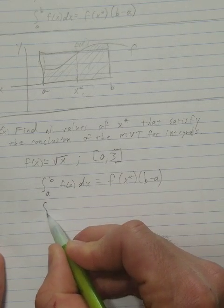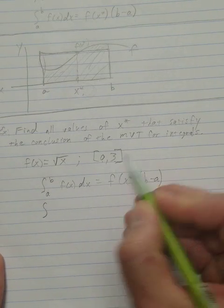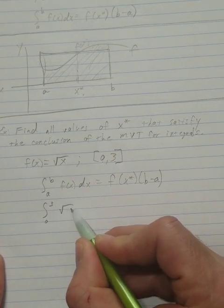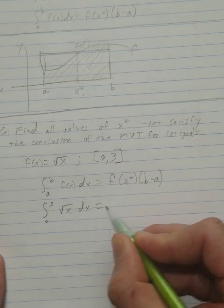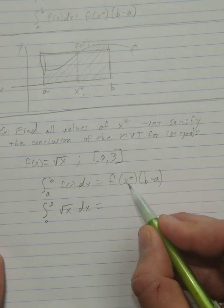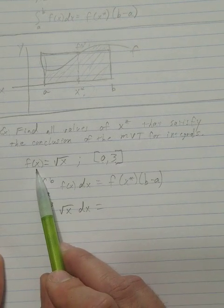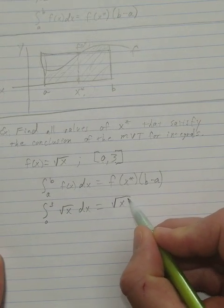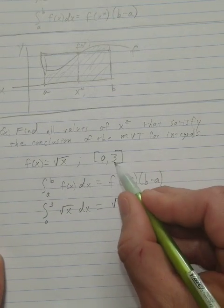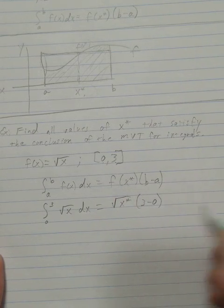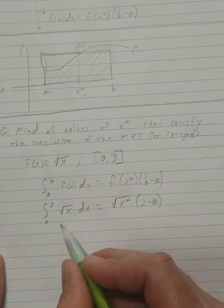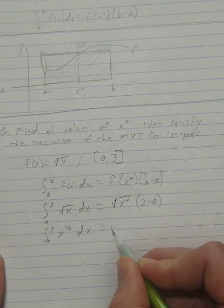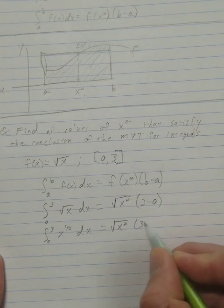Let's fill in. The integral: a is 0, b is 3. f(x) is the square root of x, dx. It's equal to f(x-star), which is just my function f evaluated at x-star — so it would be the square root of x-star, times b minus a, which is 3 minus 0. So the integral from 0 to 3 of x to the one-half dx equals the square root of x-star times 3.